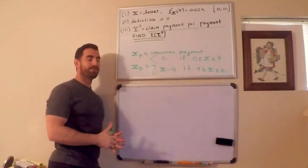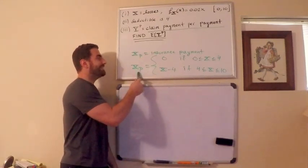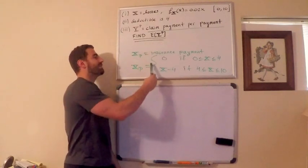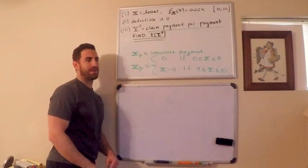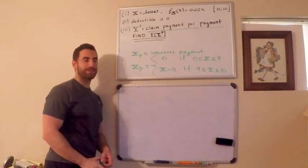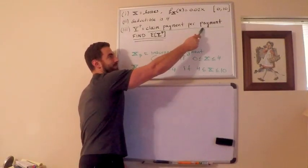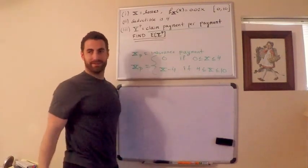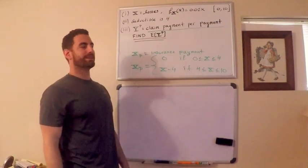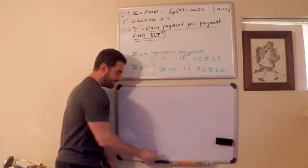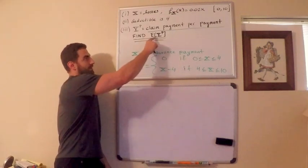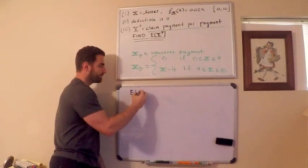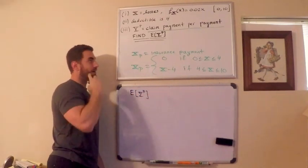Now the trap I was referring to, which I frequently fall into, is just finding the expected value of the insurance payment. When I say expected insurance payment, I mean the average insurance payment. That's not exactly what I want, though. I want the insurance payment per payment. We want the expected value, the expected claim payment per payment.